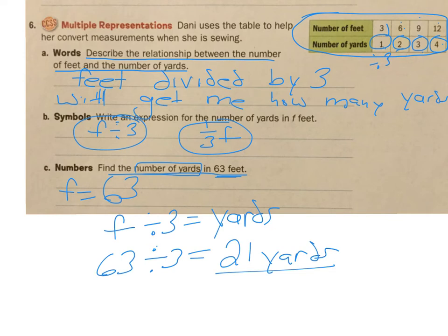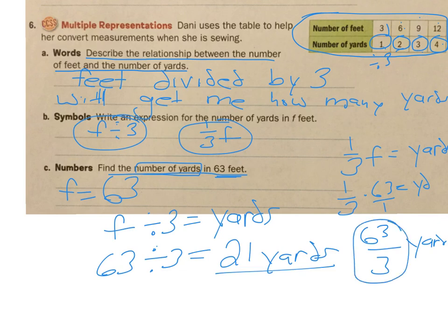Let me see if the one-third f works also. So one-third f equals yards, and f is 63, so it's one-third times 63 equals yards. Now I know that to multiply this I have to put a one under it, then I have two fractions, then I can go one times 63 is 63 and three times one is three, so it's 63 divided by three yards. And when I actually do this it's going to give me 21 yards.